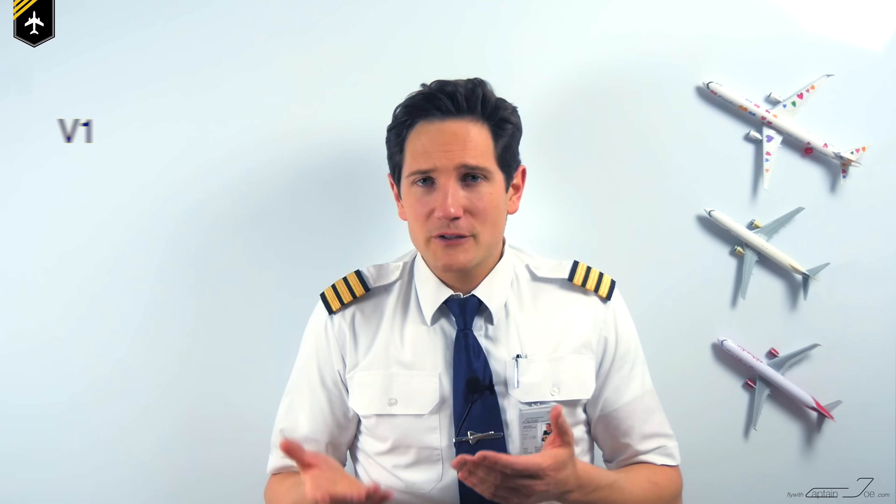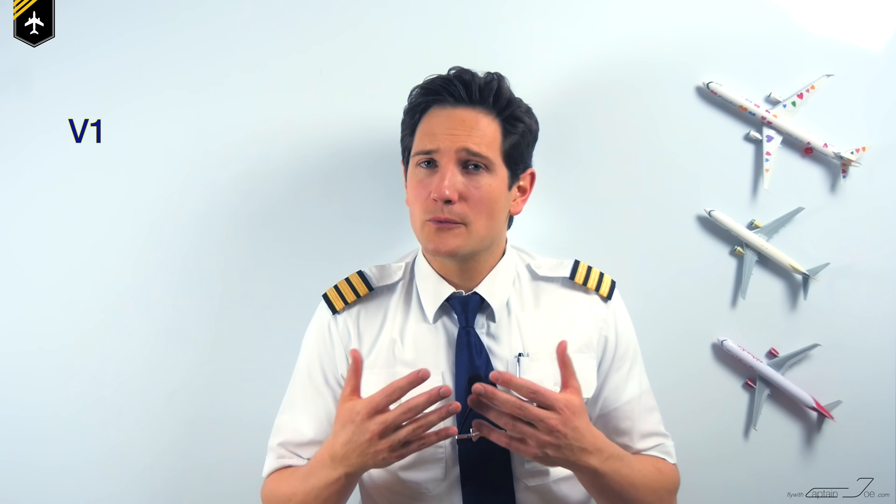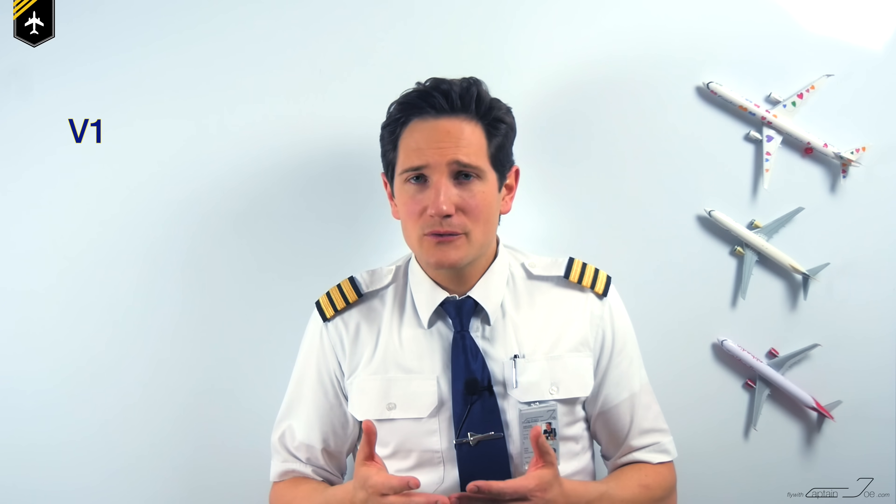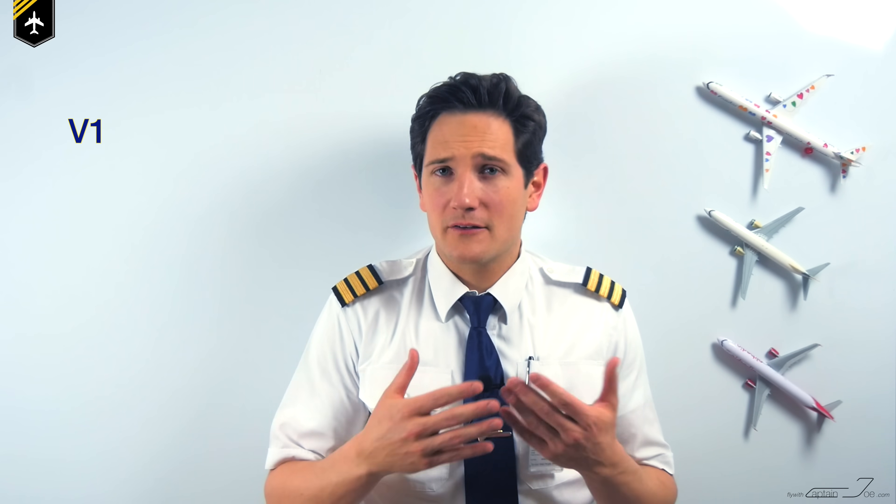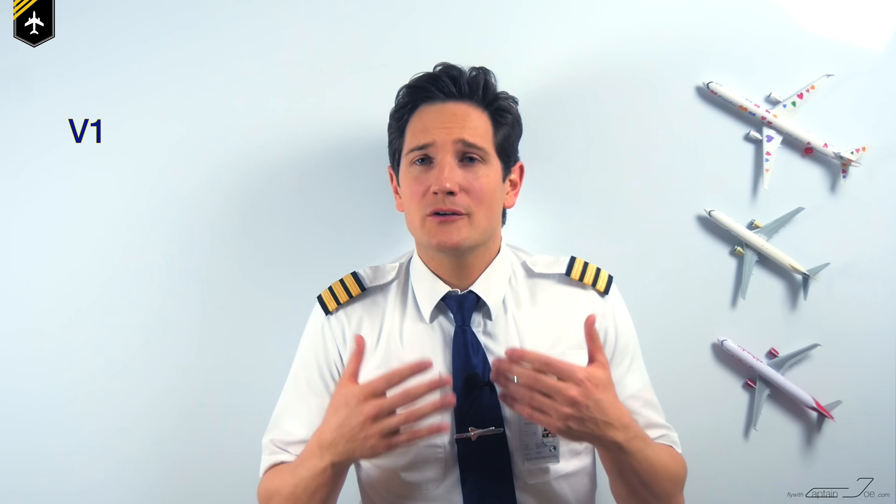Now, let's say there were to be an engine failure, so one of the reversers would be inoperative, and therefore full reverse thrust can't be added to the braking measures as mentioned before. Because V1 needs to be calculated prior to every takeoff, taking into account airplane weight, runway length, wing flap setting, engine thrust used, runway surface contamination, environmental factors, and even the aircraft brakes — to assure yourself that any given failure prior to reaching V1, you'll have enough runway left to come to a complete stop.